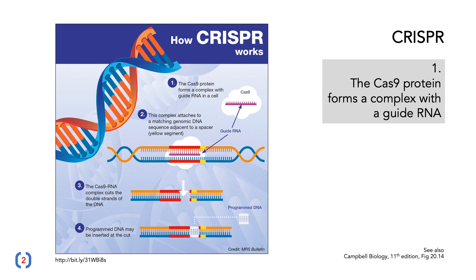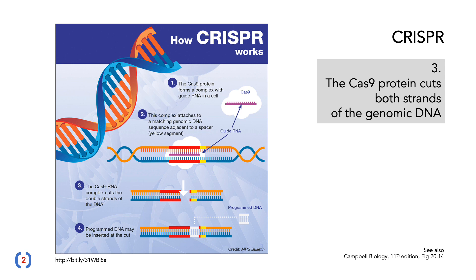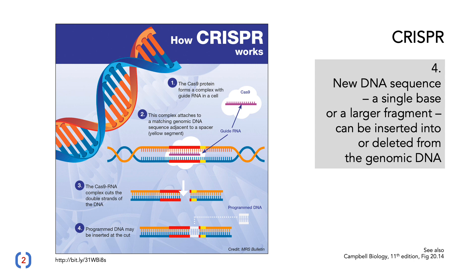It's worth looking a little bit more at CRISPR, which is a technology that has become a lot more prevalent. The Cas9 protein forms a complex with guide RNA. This RNA is a small piece of nucleic acid that matches a specific bit of DNA in the genome where you might want to make a change. The Cas9-RNA complex then attaches to genomic DNA at the specific site that matches the guide RNA sequence. The Cas9 protein cuts both strands of the genomic DNA, and then new DNA — which could be a single base pair or a larger fragment — can be inserted or deleted from that bit of the genomic DNA. This is a very targeted way of making very specific changes to the DNA sequence of an organism, perhaps as small as a single base.